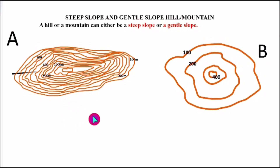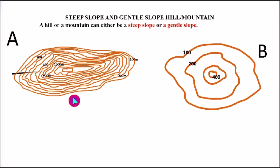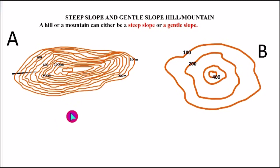Contour A is a steep slope mountain because the contour lines are closer to each other. Contour B is a gentle slope mountain because the contour lines are far apart. A steep slope mountain is a mountain that stands almost in an upright position, while a gentle slope mountain is a mountain that stands in a slanting position. It will be very difficult to climb a steep slope mountain compared to a gentle slope mountain. Let us apply cross-section to prove this.